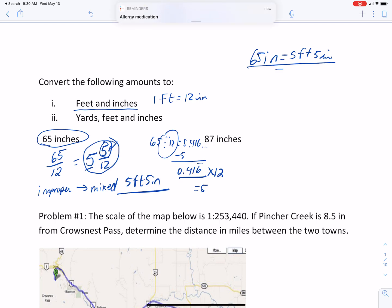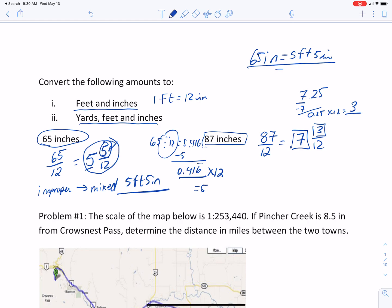So what I would say is try this one, 87 inches. How many feet and inches is that? And then we'll look at yards, feet, and inches after. So maybe pause here and try that one yourself. All right. So I hope you did the same thing. 87 over 12 is how many and how many twelfths. So I take out my calculator and I divide, and I get 7.25. So that 7 goes here. Then I subtract the 7, and I'm left with 0.25. And then I'm going to times that by 12 again. And that's going to give me 3. So 3 twelfths is a quarter. So I have 7 feet 3 inches.